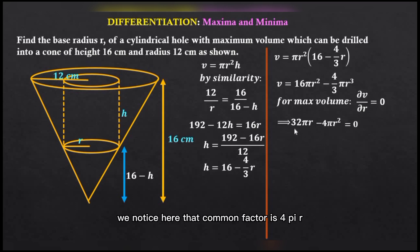We notice here that the common factor is 4πr, so dividing by 4πr we are going to have 8 - r = 0, so that finally the base radius r is 8 centimeters, just as been desired in the equation.